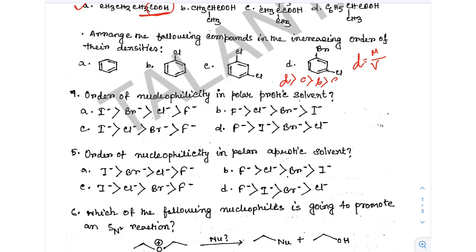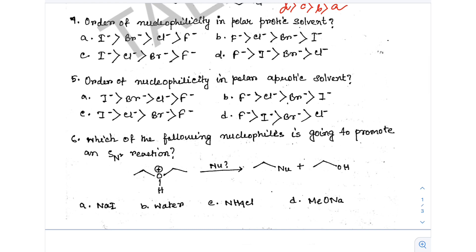In a polar protic solvent — H₂O, methanol, ethanol (C₂H₅OH) — the nucleophilicity of halides follows the order: I⁻ > Br⁻ > Cl⁻ > F⁻, because solvation stabilizes smaller ions more, reducing their nucleophilicity.